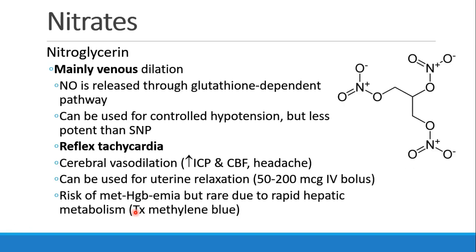The two drugs we're going to focus on primarily here are IV drugs. The first is nitroglycerin, which is primarily a venous dilator. This drug has three nitric oxide molecules attached to it, and the nitric oxide is then released through a glutathione-dependent pathway that cleaves these substances. We can use it to deliberately lower blood pressure at a surgeon's request during an intraoperative procedure. It's not as potent as sodium nitroprusside, which we'll talk about next, but it is an option for controlled hypotension.